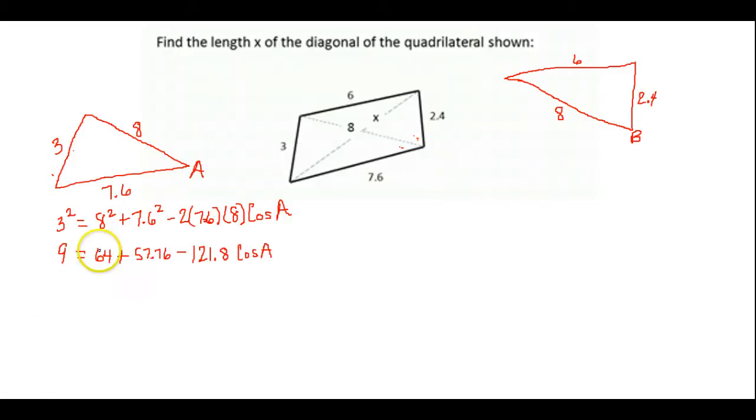3 squared is 9, 8 squared is 64, 7.6 squared is 57.76, and negative 2 times 7.6 times 8 was a negative 121.8 times my cosine of A. The next thing I want to do is solve for cosine A, so I want to move everything else to this other side. If I go ahead and combine, add the 64 and the 57.76, I get 121.76, that's minus 121.8 cosine of A.